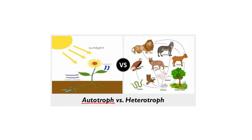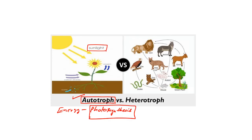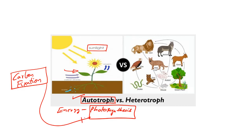An autotroph is an organism which can produce its own energy through the process of photosynthesis. It can produce its own complex organic compounds by drawing energy from sunlight, and it also carries out carbon fixation through which carbon dioxide is absorbed into the organism. This is an essential ingredient for photosynthesis. The autotroph also draws all the essential nutrients and water from the soil. The energy produced by an autotroph forms the very foundation of an ecosystem because it is the first source of energy upon which the entire food chain depends.